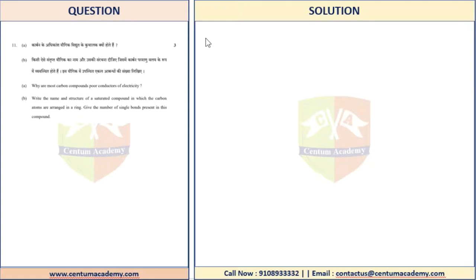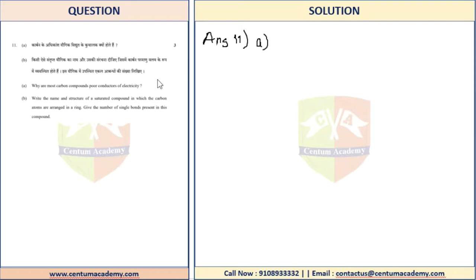How would you answer this? One of the most important things is to write the correct answer number. You'd write 'Answer 11 Part A.' Why are most carbon compounds poor conductors of electricity? The answer is that carbon compounds are mostly formed of covalent bonds, so there are very little charges or free electrons available, and therefore they do not conduct electricity. Please do not just write 'because they are covalent compounds' — that's not a good way to answer.